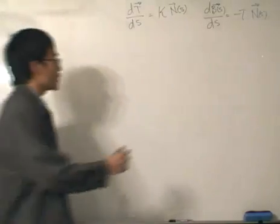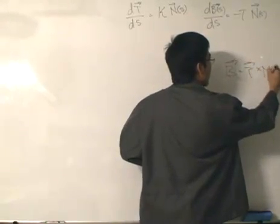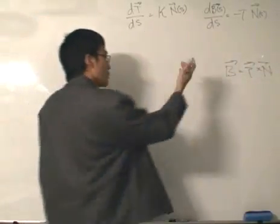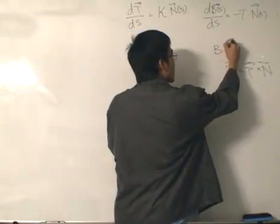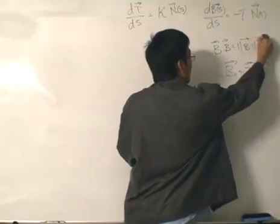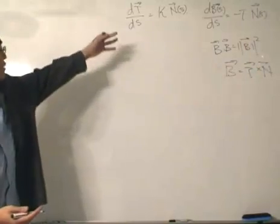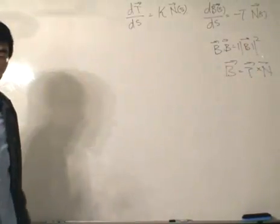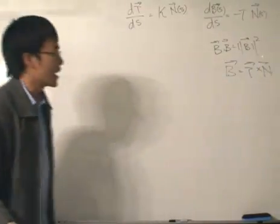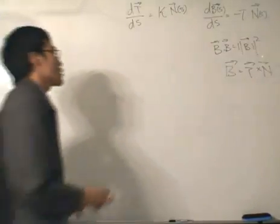We started off with the tangent cross with the unit normal, then we differentiate to get the next equation — much like how we started off with one equation and differentiated to get another. So now let's find the first derivative of the unit normal vector. But first, we must carefully represent the unit normal vector in terms of B and T, and then differentiate accordingly, just like how we differentiated the previous equations.